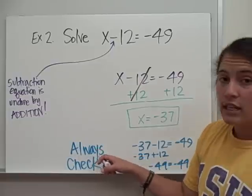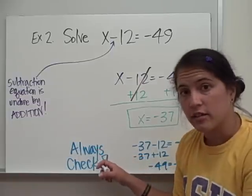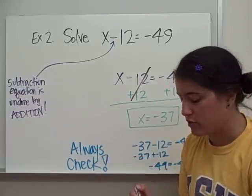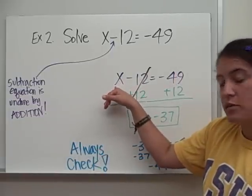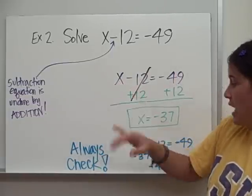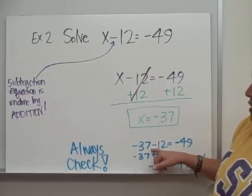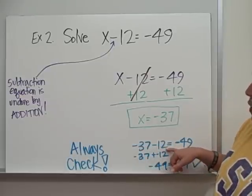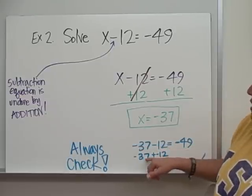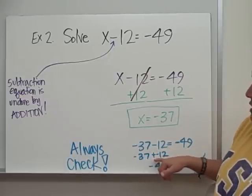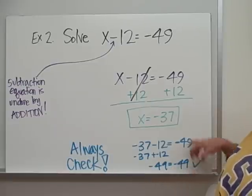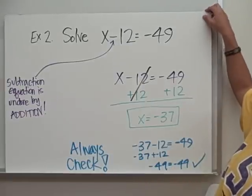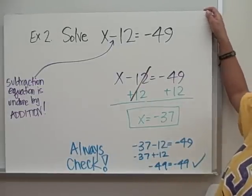I always check my answers. When I substitute negative 37 back into x, I get negative 37 minus 12. I touch twice: negative 37 plus negative 12 equals negative 49, which is my original answer. So I've gotten that one correct.